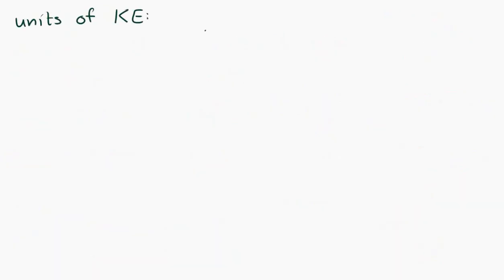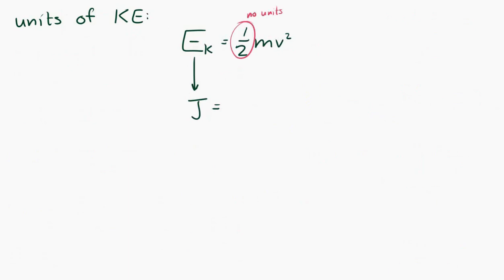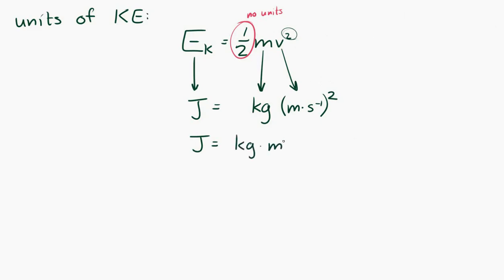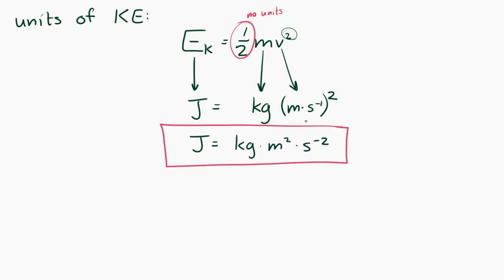Let's take a look at the units. Kinetic energy has to have units of joules. From one-half mv squared: m brings units of kilograms, v has units of meters per second, and that's squared. So if we do the algebra, a joule is equal to a kilogram times meter squared per second squared. That's what a joule is in terms of fundamental SI units.